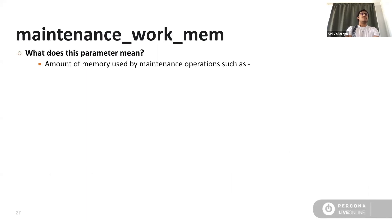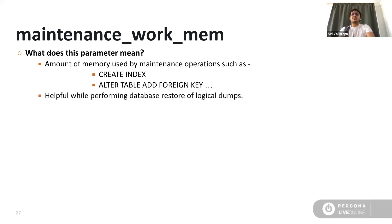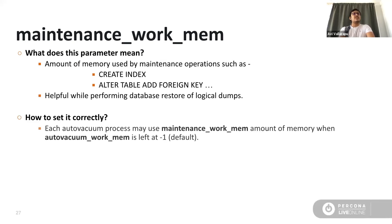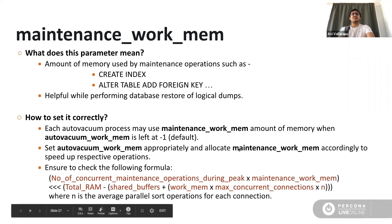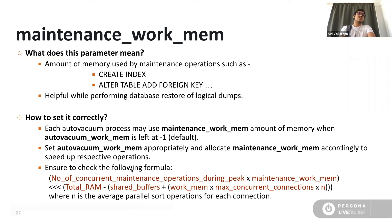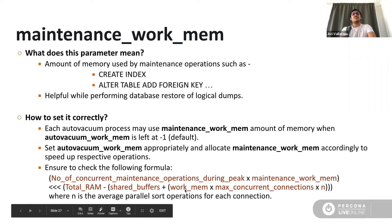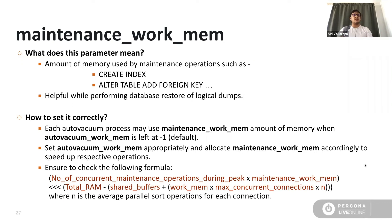Maintenance work mem is the amount of memory used for maintenance operations like CREATE INDEX, ALTER TABLE ADD FOREIGN KEY. Increasing maintenance work_mem during a database restore can be helpful. Auto vacuum can also use maintenance work_mem, though in the source code it's kind of hard-coded to 1 GB; you can set auto_vacuum_work_mem to a specific value so auto vacuum doesn't consume maintenance work_mem. Make sure you check the formula: number of concurrent maintenance operations during peak times multiplied by maintenance work_mem should be much less than total RAM minus shared buffers plus work_mem times max concurrent connections times the average parallel sort operations per connection.